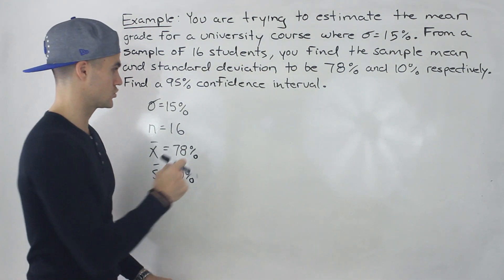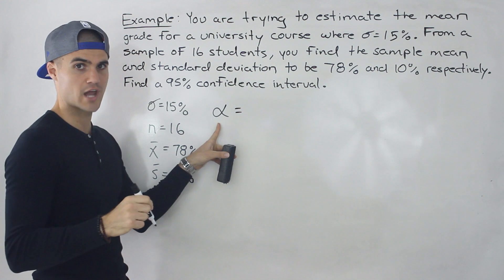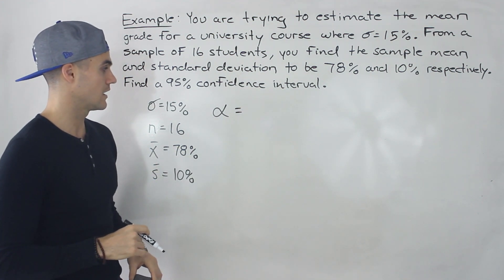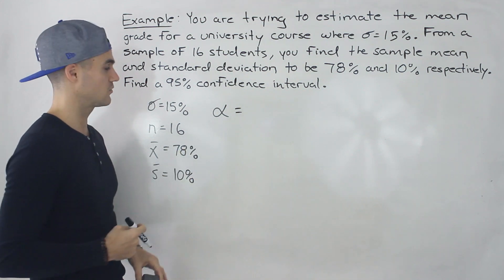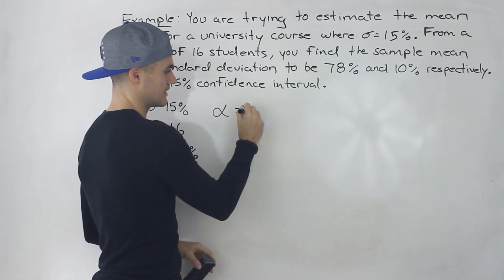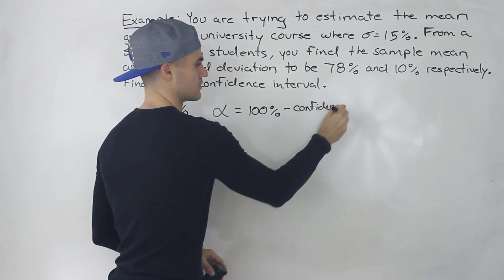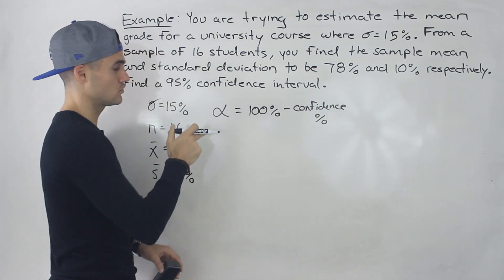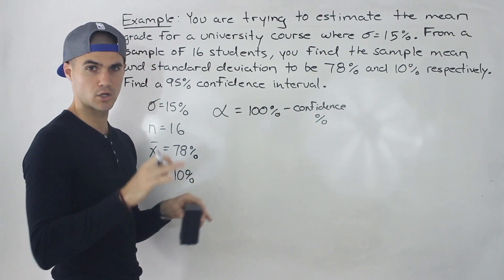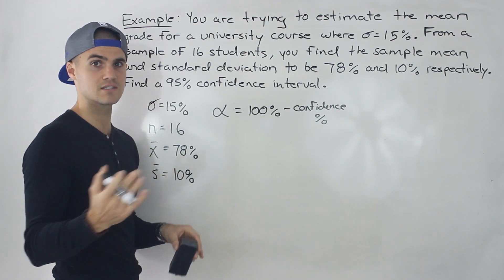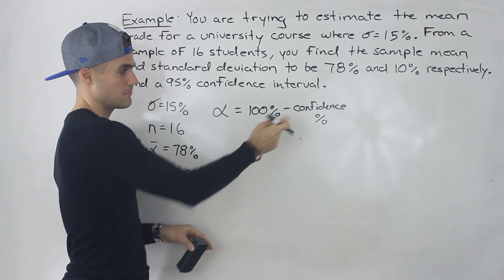One more variable I want to introduce in this video — we haven't covered it yet — is alpha. You're going to start seeing this alpha come up in this chapter and for the rest of the stats course. I'm going to quickly explain what it is and how it relates to confidence intervals — it's like a mini lecture within the question. Basically, this alpha is 100% minus the confidence percentage. That's what it is when you're talking about confidence intervals.